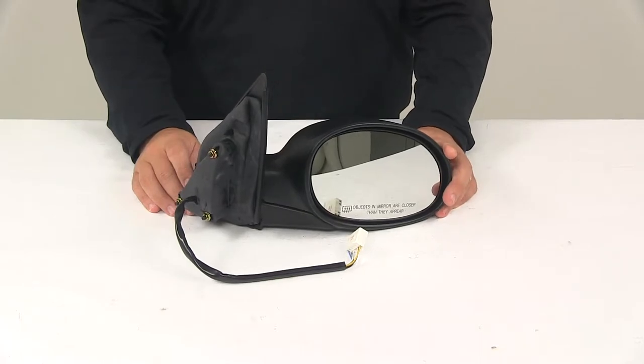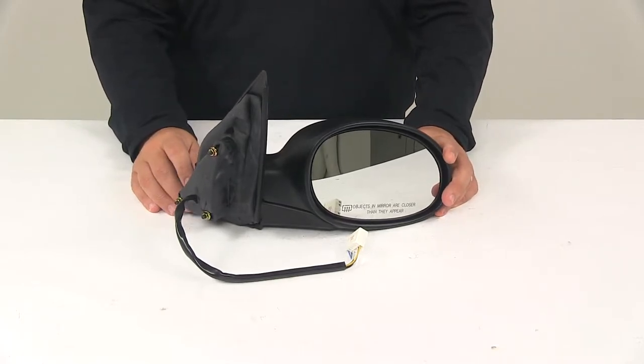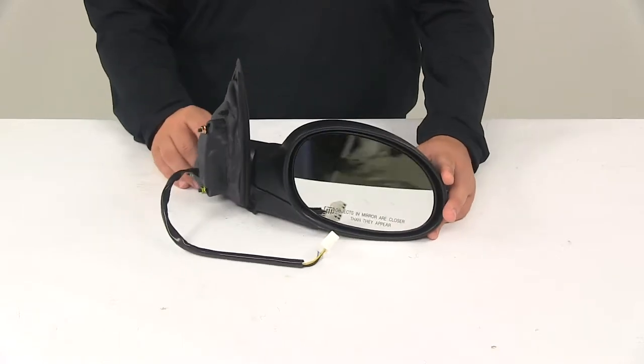The side view mirror is a direct replacement for the passenger side factory mirror on the vehicle. It's modeled after the manufacturer's original look and fit.